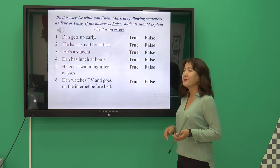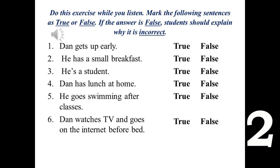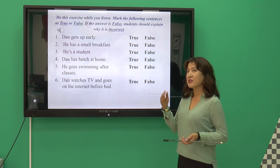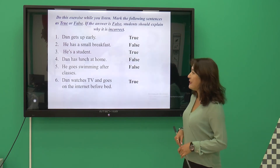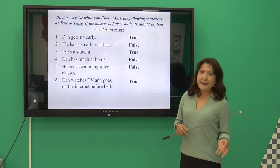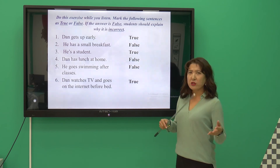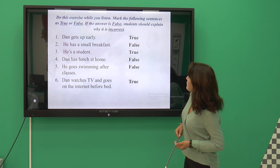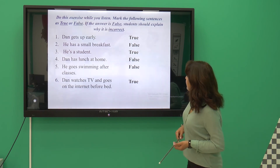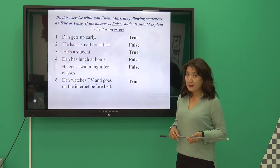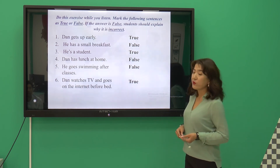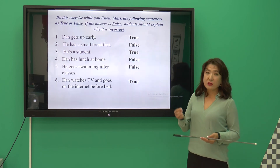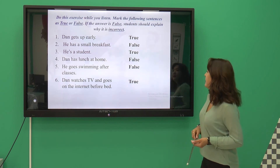Let's check your answers. The first sentence — Dan gets up early — is true. The second — he has a small breakfast — is false, because he has a big breakfast: bacon, eggs, cereals, and orange juice. The third — he is a student — is true. The fourth — Dan has lunch at home — is false, because he has lunch at university. The fifth is also false, because he goes swimming before class, in the early morning. And the last one — he watches TV and goes on the internet before bed — is true.